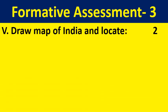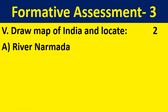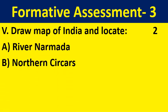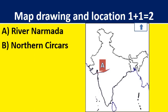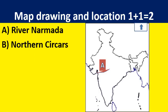Draw a map of India and locate River Narmada and Northern Sarkars. Narmada is located passing through Gujarat, Maharashtra, and Madhya Pradesh. Northern Sarkars is also to be marked. Draw a map of India and locate these places properly.